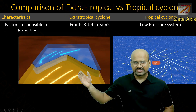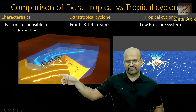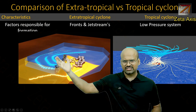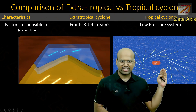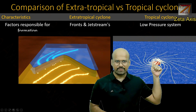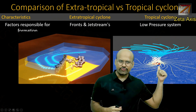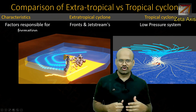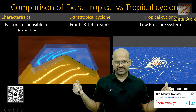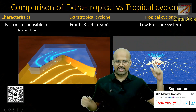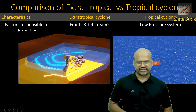Here we can see the extratropical cyclone with its warm front and cold front and how it is formed. Over here we can see a tropical cyclone, where there is a low pressure system and air from surrounding regions moves toward it. So one is created by a low pressure system and another is created by fronts and jet streams.